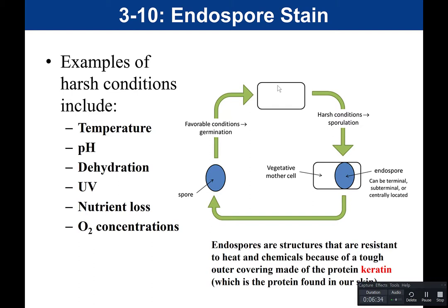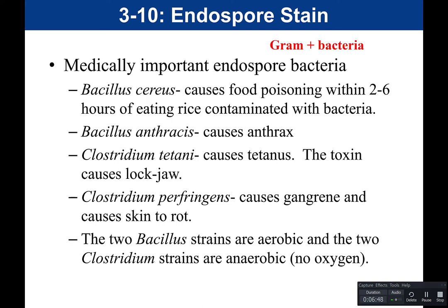The endospore is a structure bacteria use to survive when conditions become harsh — it's for survival, not reproductive purposes. Most endospore-producing bacteria are gram-positive, with some exceptions, and generally fall within two genera. Bacillus species are aerobic, meaning they grow when O2 is available. Clostridium strains are anaerobic, meaning they grow in the absence of oxygen. These two genera have different O2 requirements.